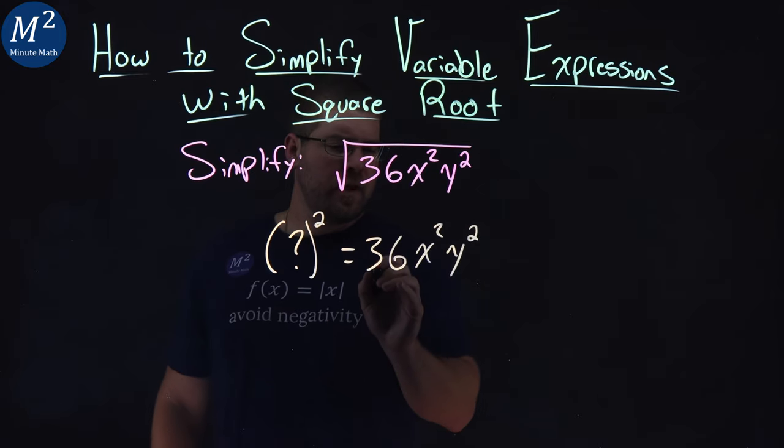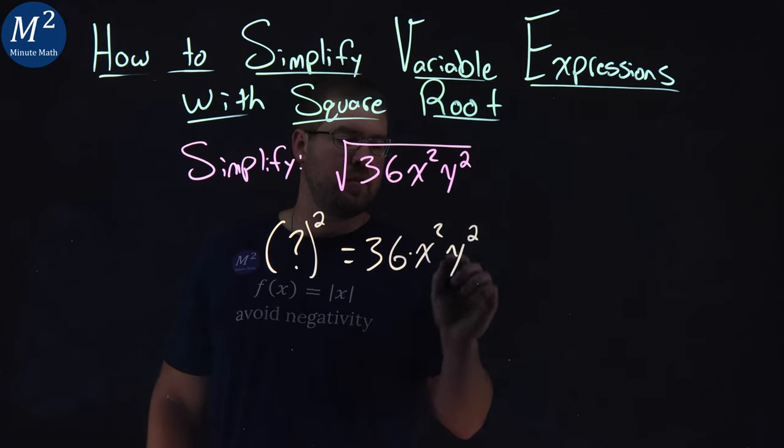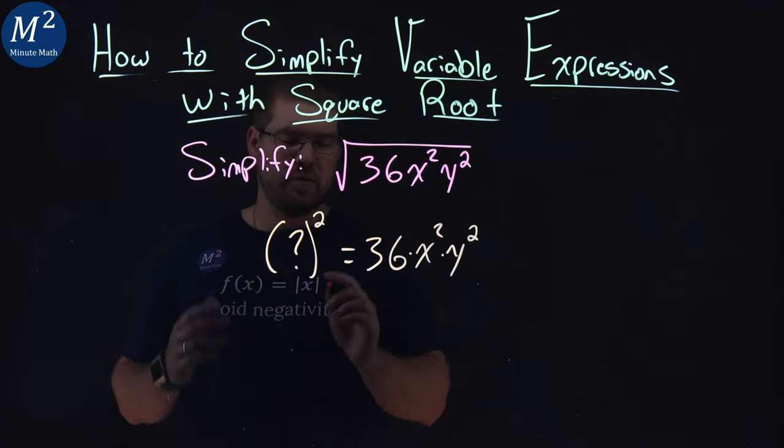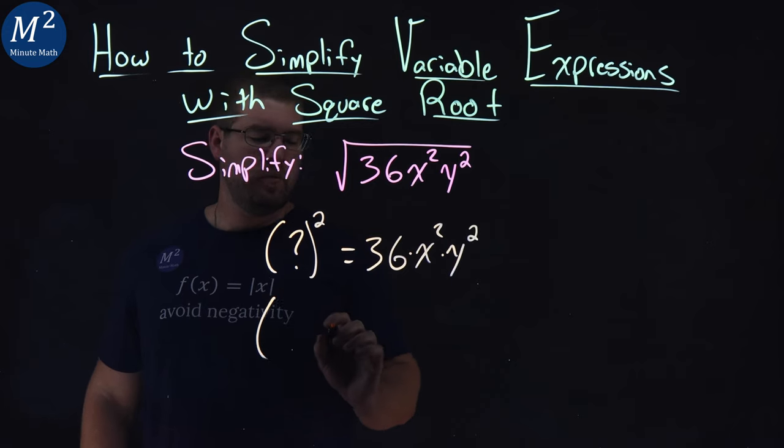Okay, notice that 36 is times x squared, which is times y squared. So let's break that down, we know our square root rules, or squared rules with exponents. Let's break down each part here.